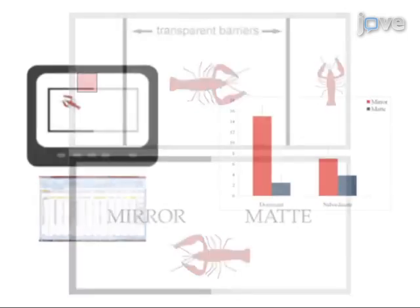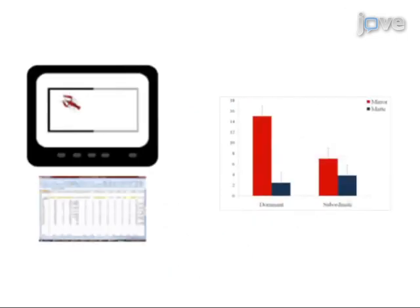Ultimately, results can be obtained that show differences between dominant and subordinate crayfish with respect to specific behavioural responses to visual cues, through behavioural analysis of videotapes.